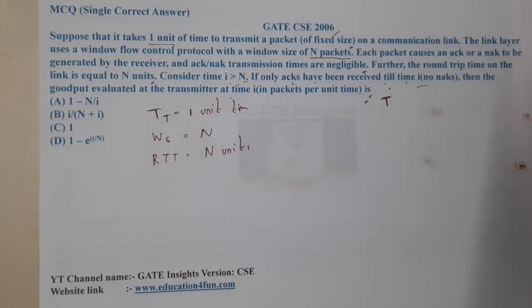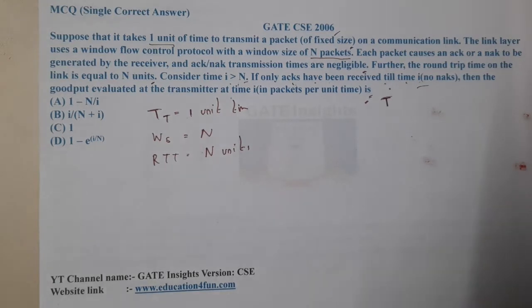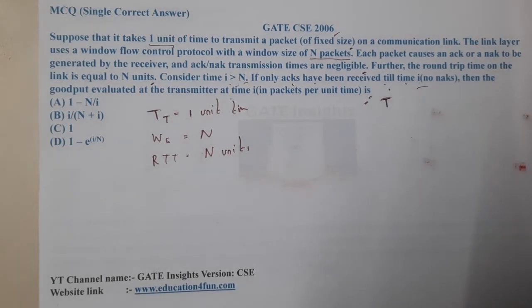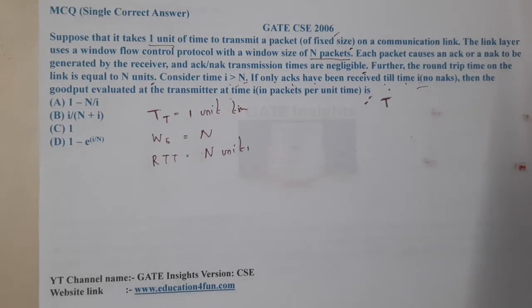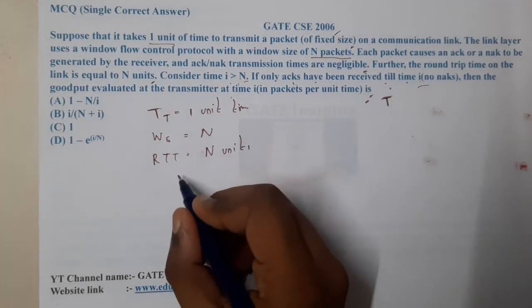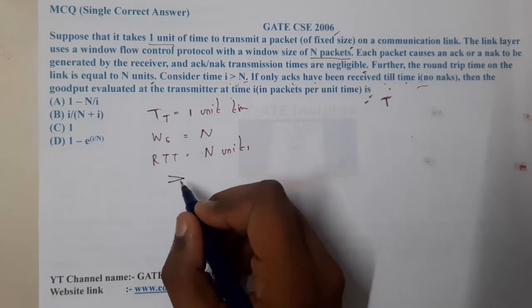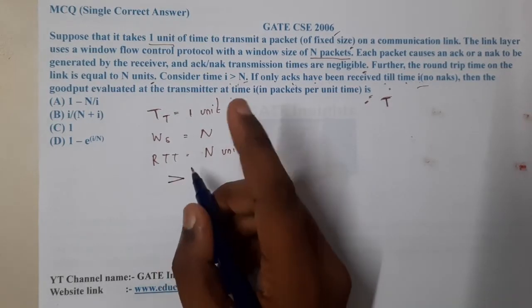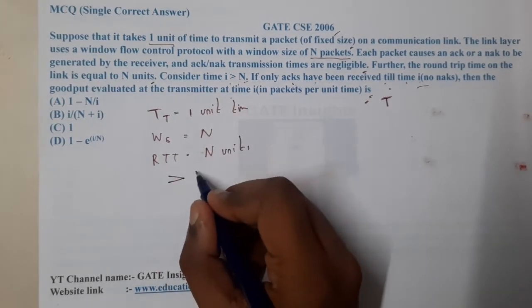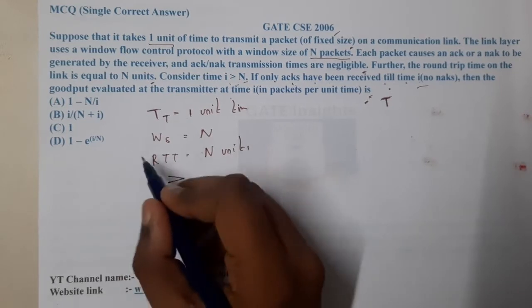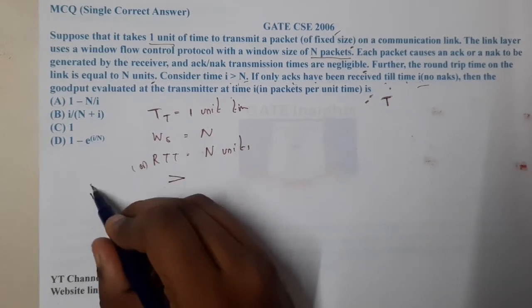The round trip time on the link is equal to N. So if I send my first packet, I can expect the first acknowledgement at N units of time.